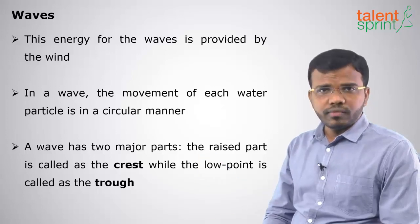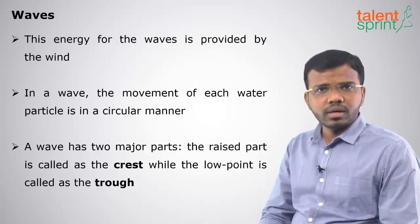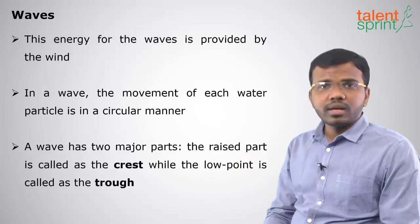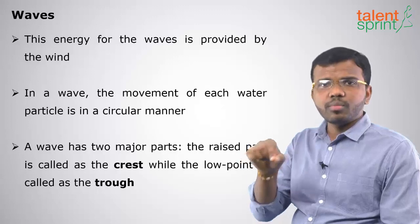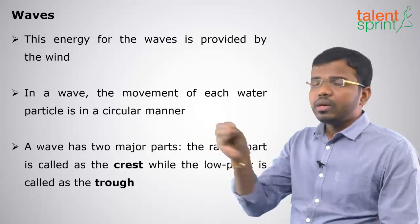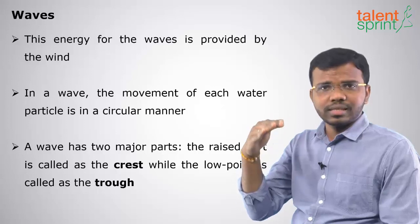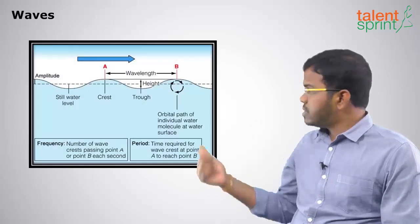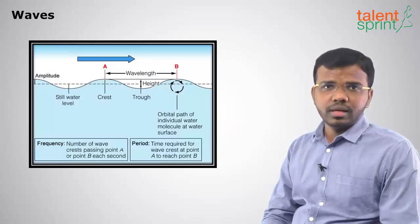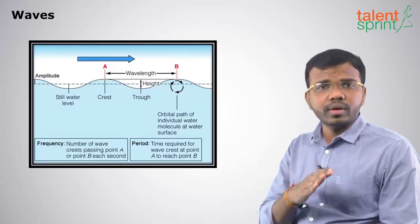The energy for the wave is provided by the wind which is blowing — winds provide the energy to waves. The movement of each water particle is always circular in manner. When it starts from one point, it will come back to the same point. That's why there is no movement of water from one place to another, but only the movement of energy. The rise is called crest and the fall is called trough, and you can see in the diagram that the particle comes back to the same position after taking a circular path.